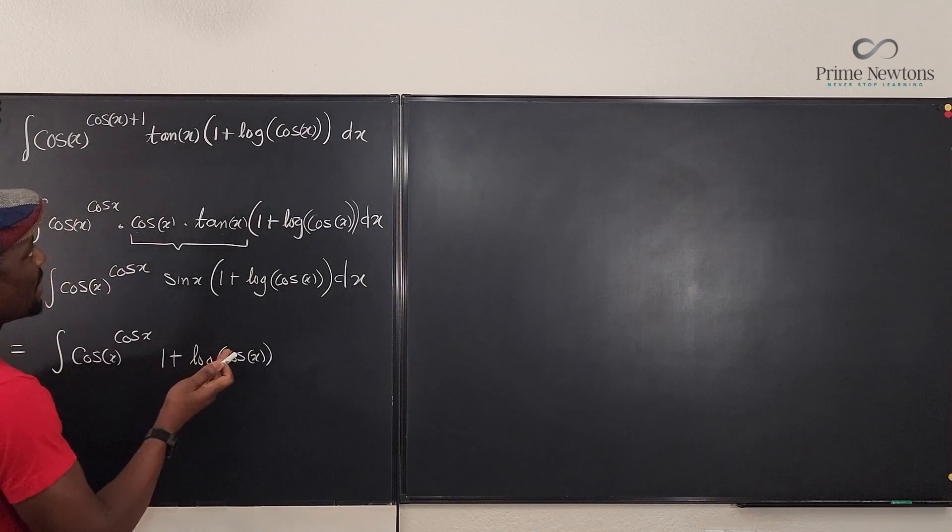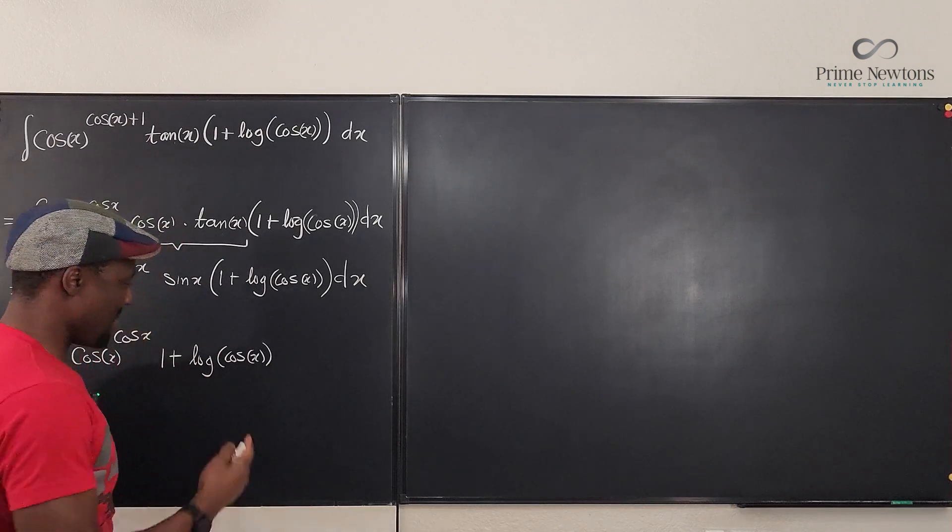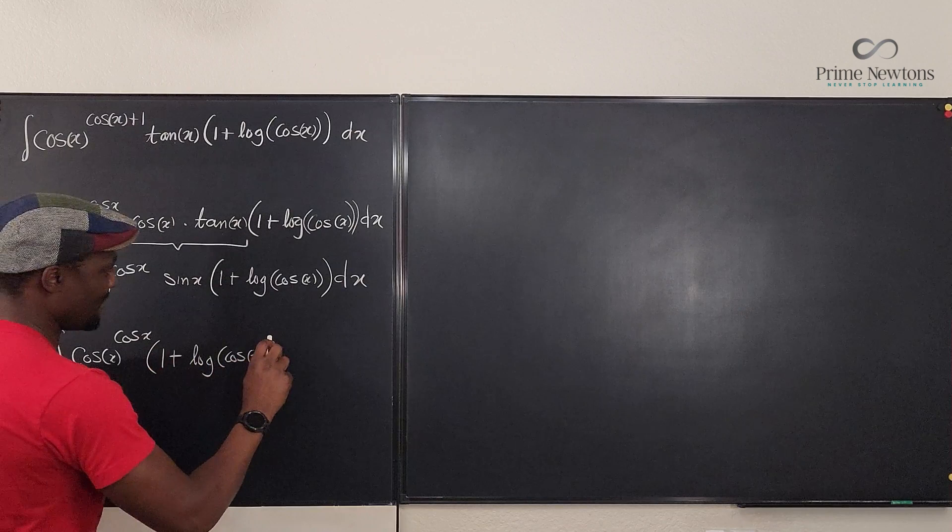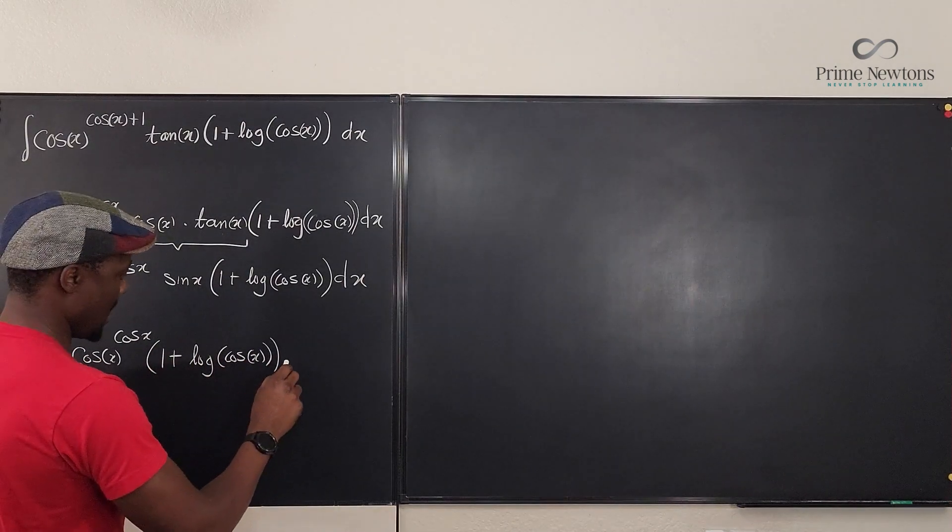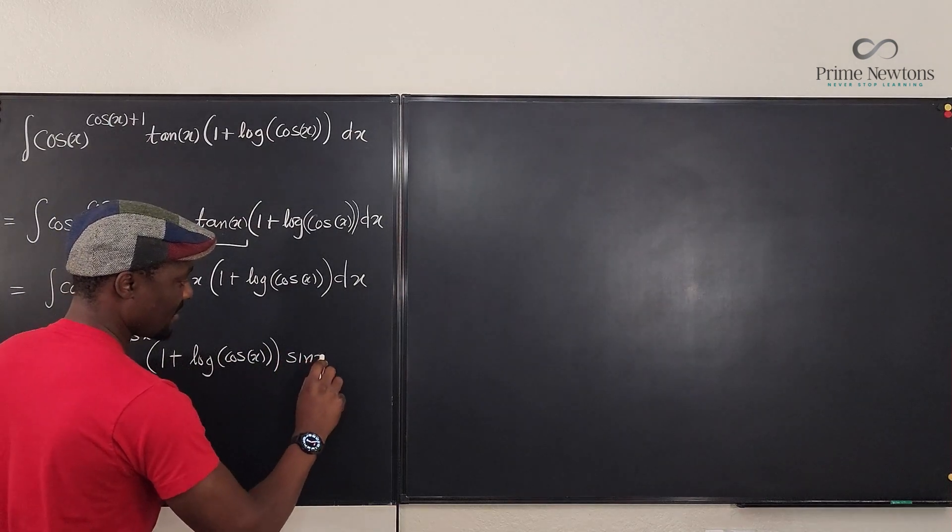Remember that this log is, you can write it as ln. Maybe I should change it or leave it. This is how it was written, so I'm just going to leave it. And this is going to be, then I move the sine x here. Sine x dx.